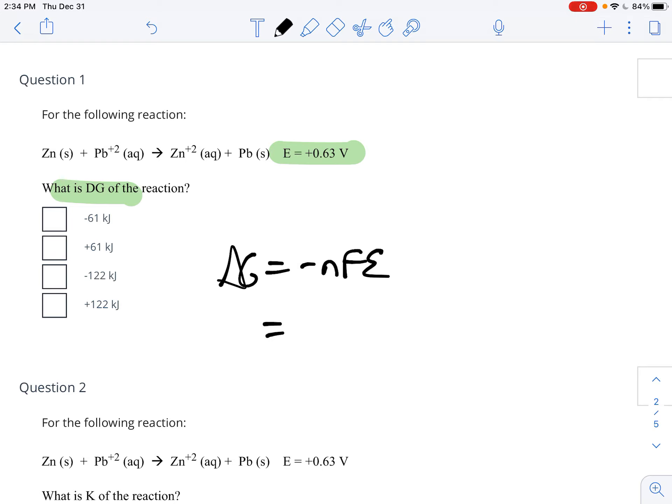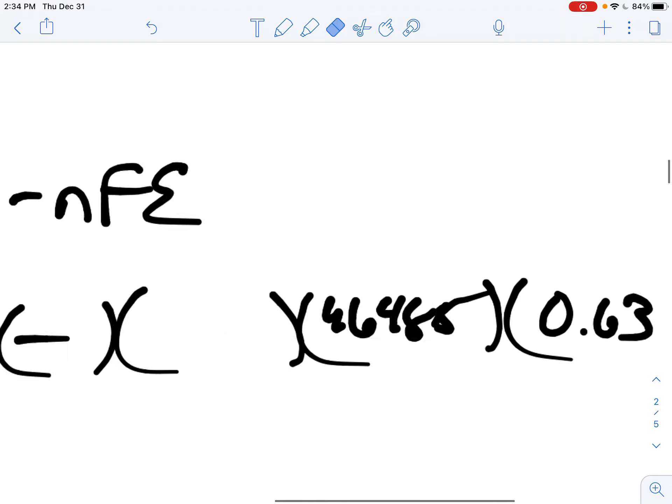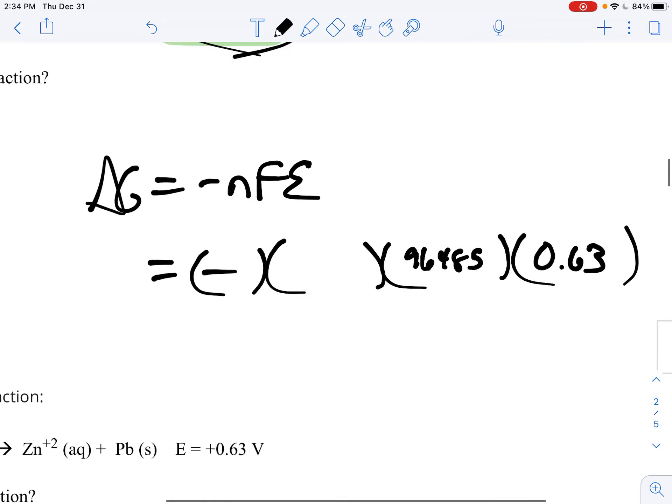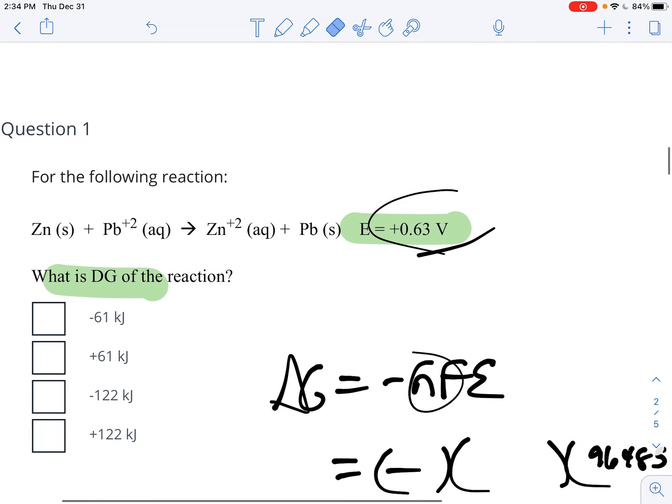And so consequently, we just have to plug everything in. So this is going to be negative times, the E is easy, that's 0.63. And then the F is 96,485, as we discussed in the lecture part of things. So that's 96,485. And then N is the only part of this that gets a little bit screwy.